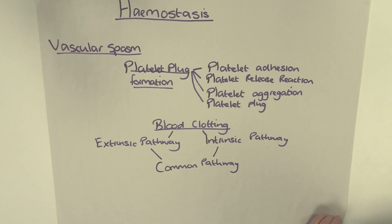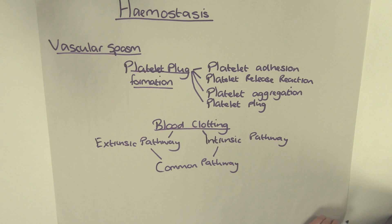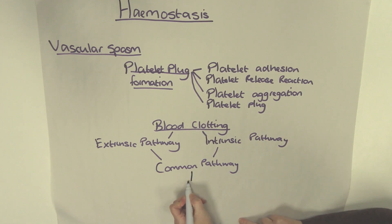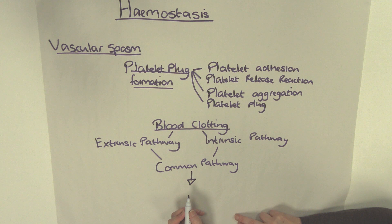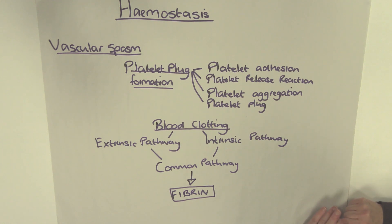In the presence of calcium, prothrombinase — the result of both the extrinsic and intrinsic pathways — converts prothrombin, or clotting factor 2, into thrombin. Thrombin in turn converts soluble fibrinogen into insoluble fibrin, and it is these fibrin threads which form the threads of the blood clot. All of these pathways together result in the production of fibrin, which makes up the blood clot. Thrombin also activates factor 13, which stabilises the fibrin threads and strengthens the clot.